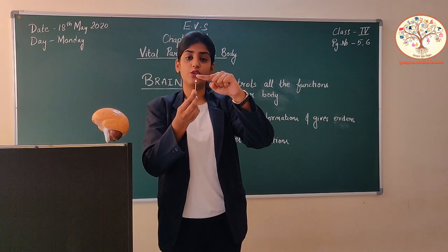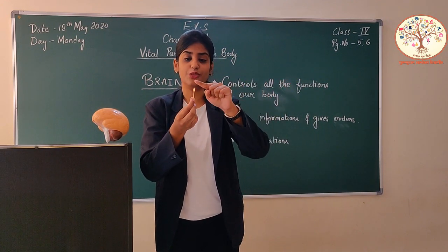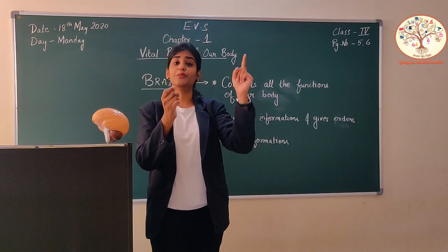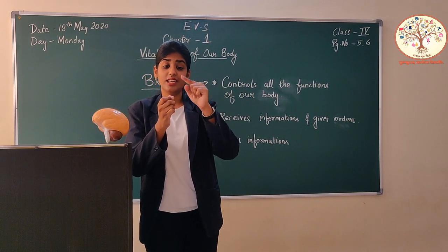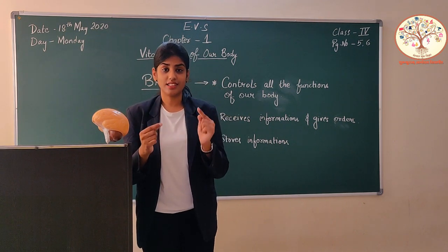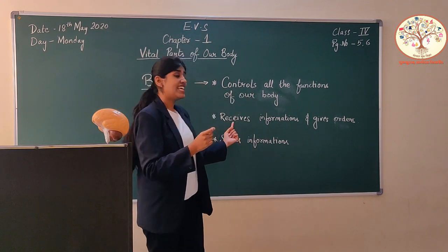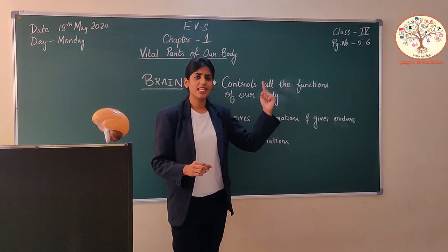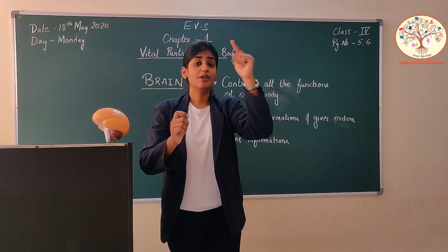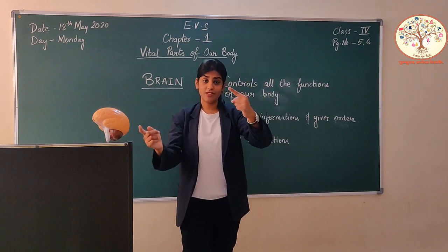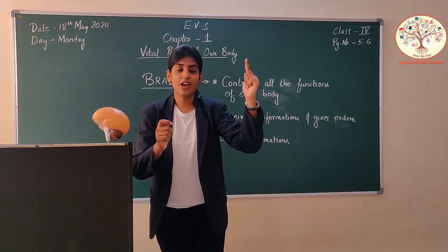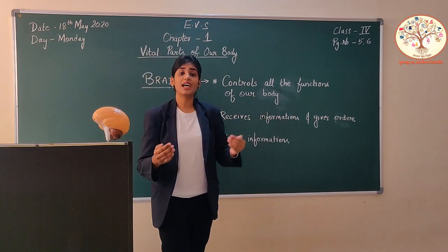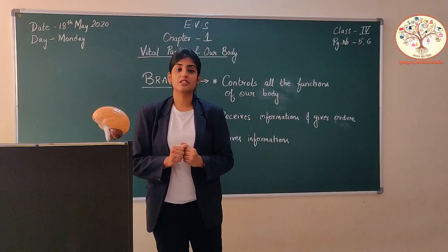If you put your finger over the fire, what will you do? You will remove your hand. When your finger is over the fire, the skin sends a signal to the brain that there is something hot. The brain receives that information and gives the order to remove your hand — otherwise it will burn. So the second function of brain is it receives information from our sense organs and gives orders to different parts of our body.